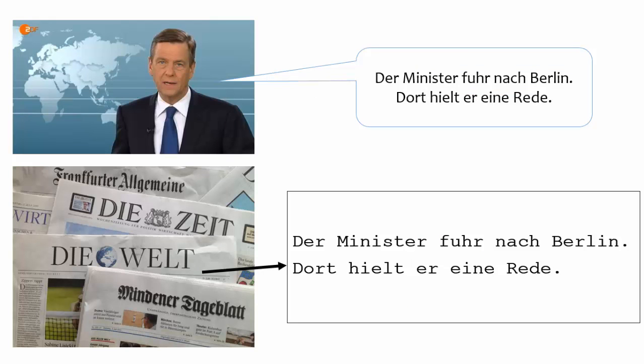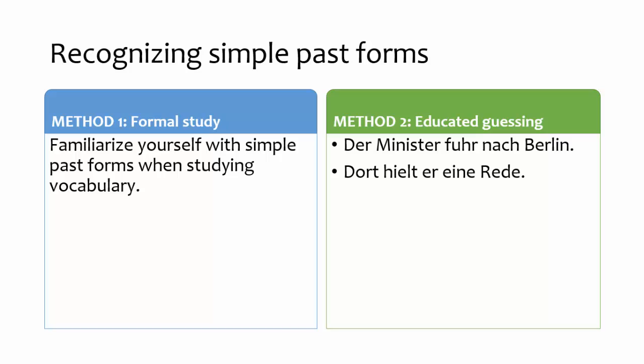The simple past is used in two special situations. One of these is formal speech, such as the TV news and newspapers. When you're listening to the news or reading a newspaper, or otherwise encountering the simple past, you will need to recognize the fact that the simple past is being used, and recognize the meaning of the verb.